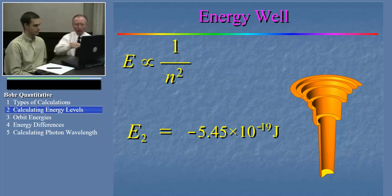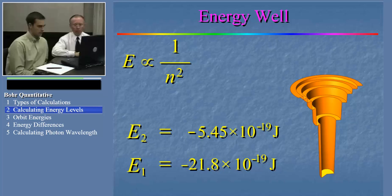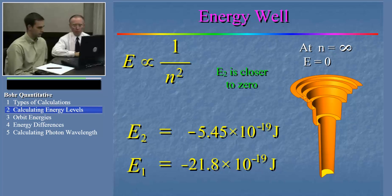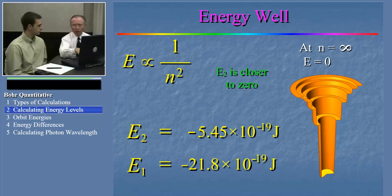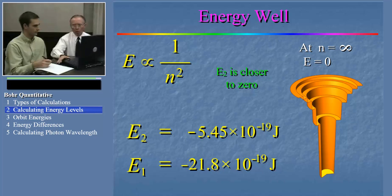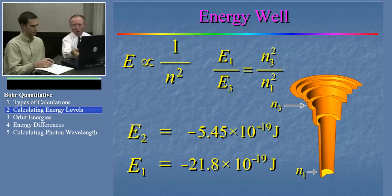How does the number we calculated for E2 compare to the value for E1? Well, E2 appears to be less negative, meaning it's becoming more positive, working its way up towards zero. The calculation corresponds to the principles of Bohr's model. Now the next challenge is for you to try this same approach, this time calculating the value of E3, knowing the value of E1. Hit pause and try that on your own.